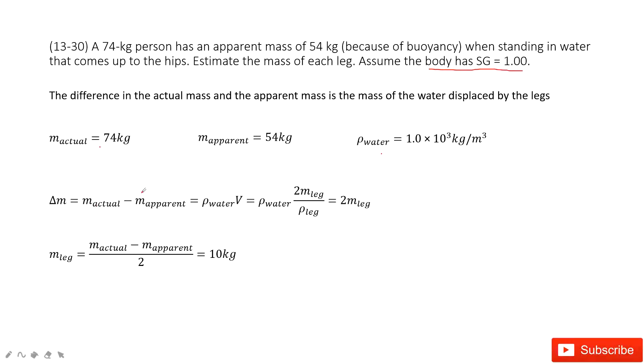So we use the actual mass minus apparent mass equals the mass of water displaced by the legs. This is the density of water times V. V is the mass of the legs divided by density of the legs. For each leg, we need to estimate the mass of each leg. This person has two legs.